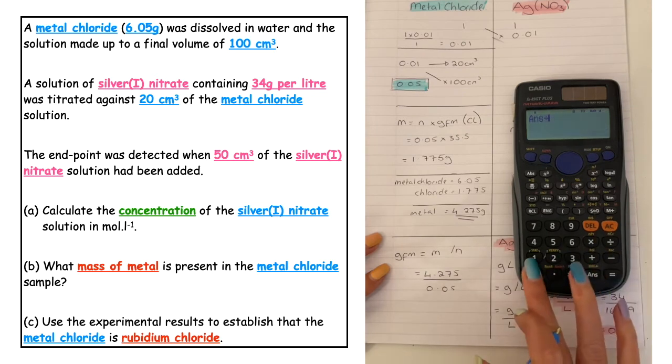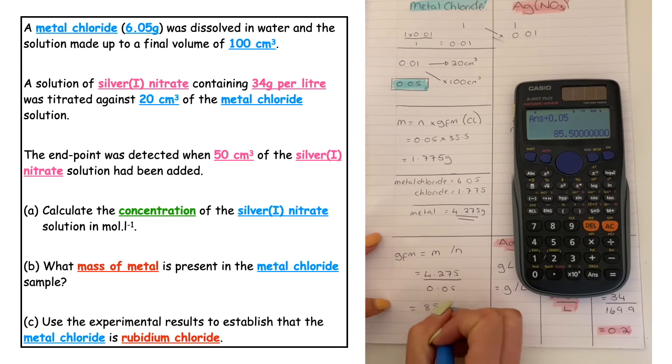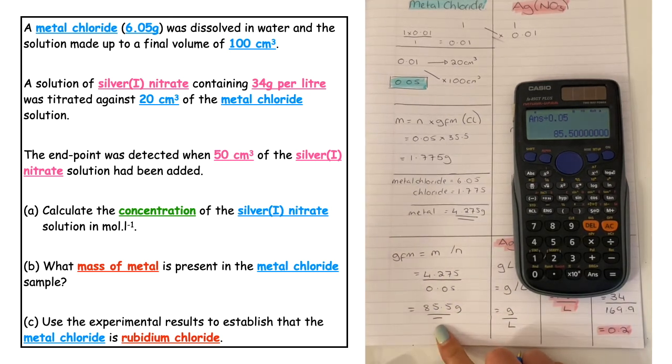Divide by 0.05, which comes in at 85.5 grams. When you look this up in the data booklet, you can see that the GFM of rubidium is 85.5.